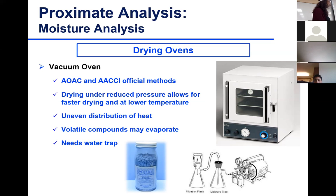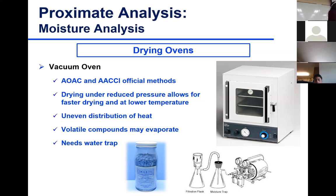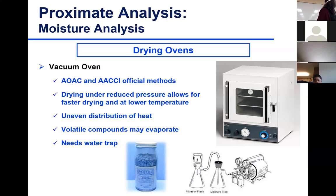An important feature of the vacuum oven you'll see in the lab is the water trap. You don't want moisture that evaporates to reach your vacuum pump. We call it a cold finger — basically a flask with desiccant in it. When the desiccant is dry it's blue; when saturated it turns pink or purple, indicating it needs replacement. The desiccant captures the water, preventing it from reaching the pump.